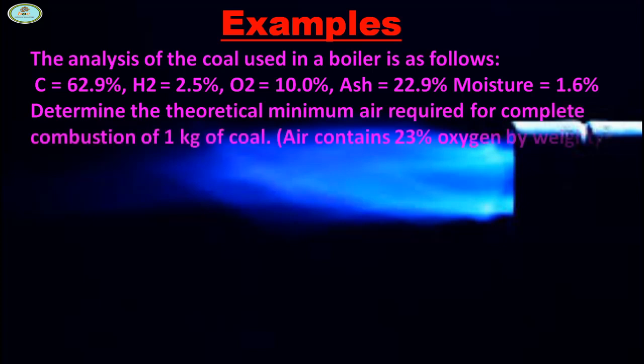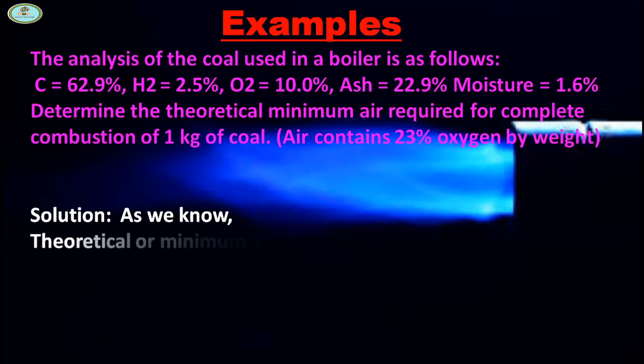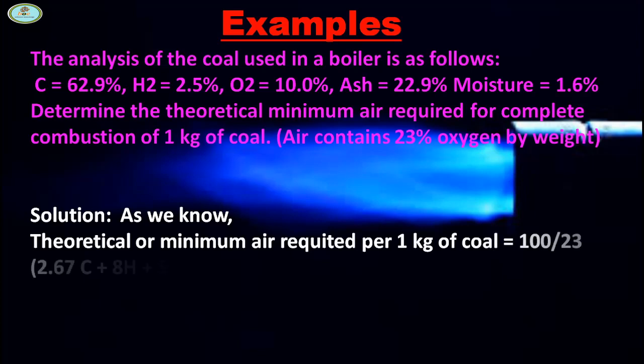Here it contains 23% oxygen by weight. As we know, theoretical or minimum air required for 1 kg of coal is 100/23 × (2.67C + 8H + S - O). Putting all the values, we found 7.74 kg per kg of coal burned.